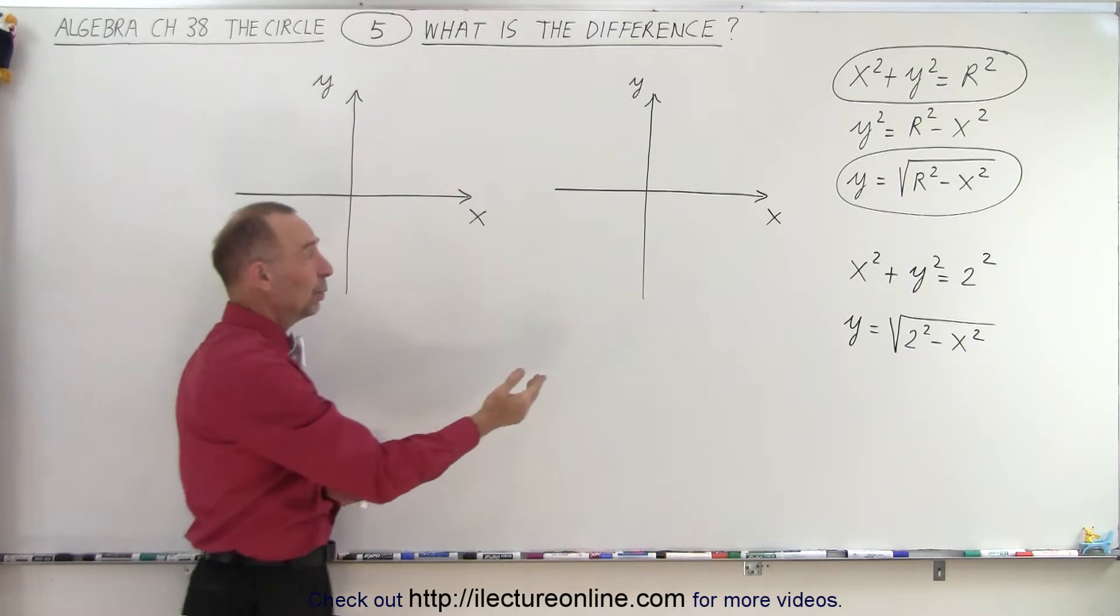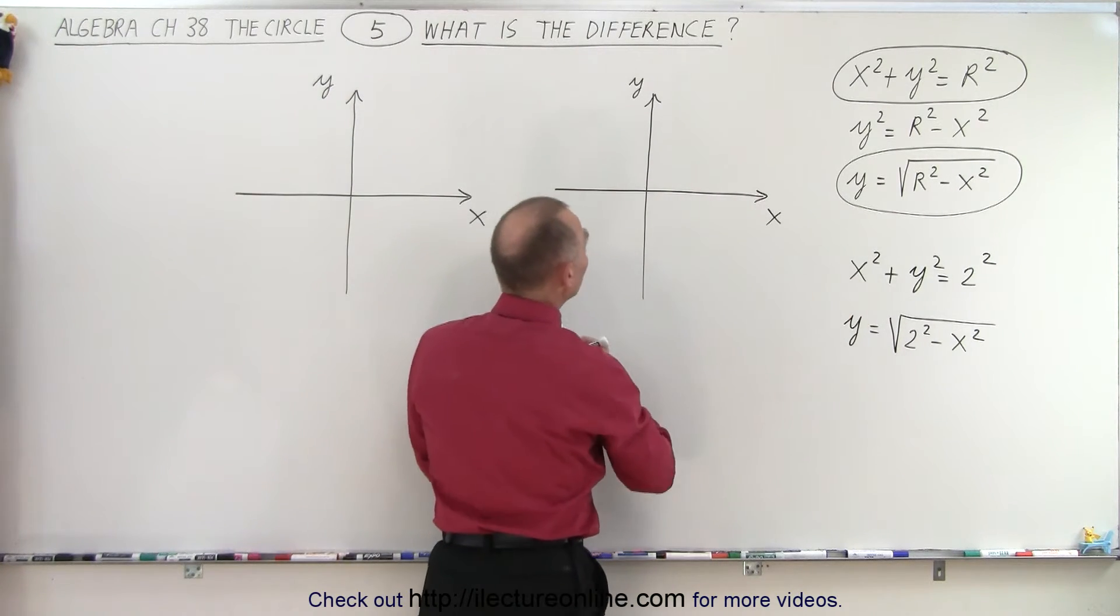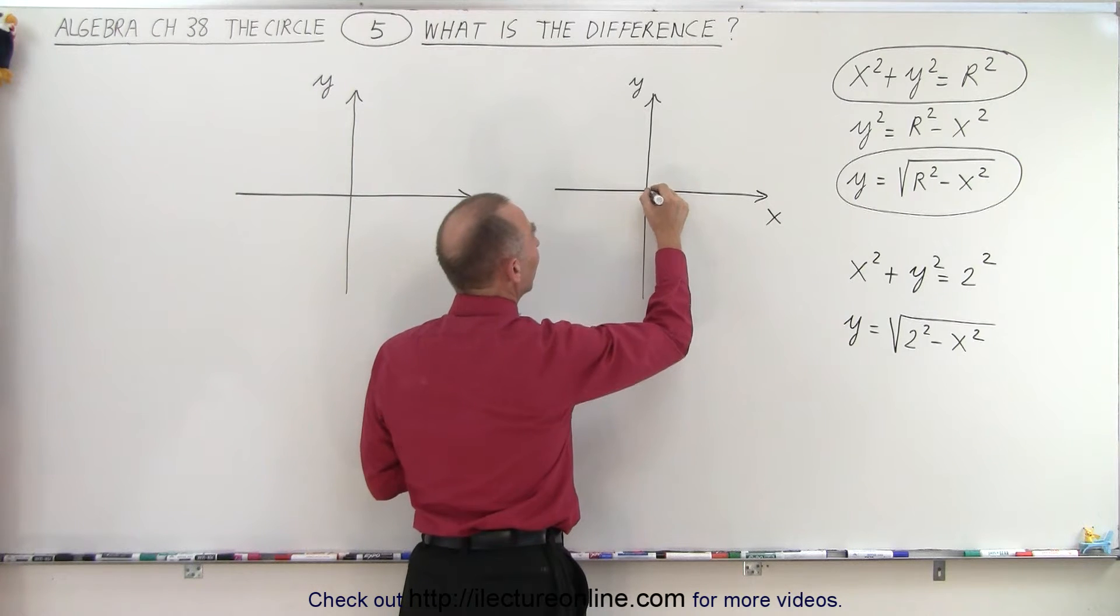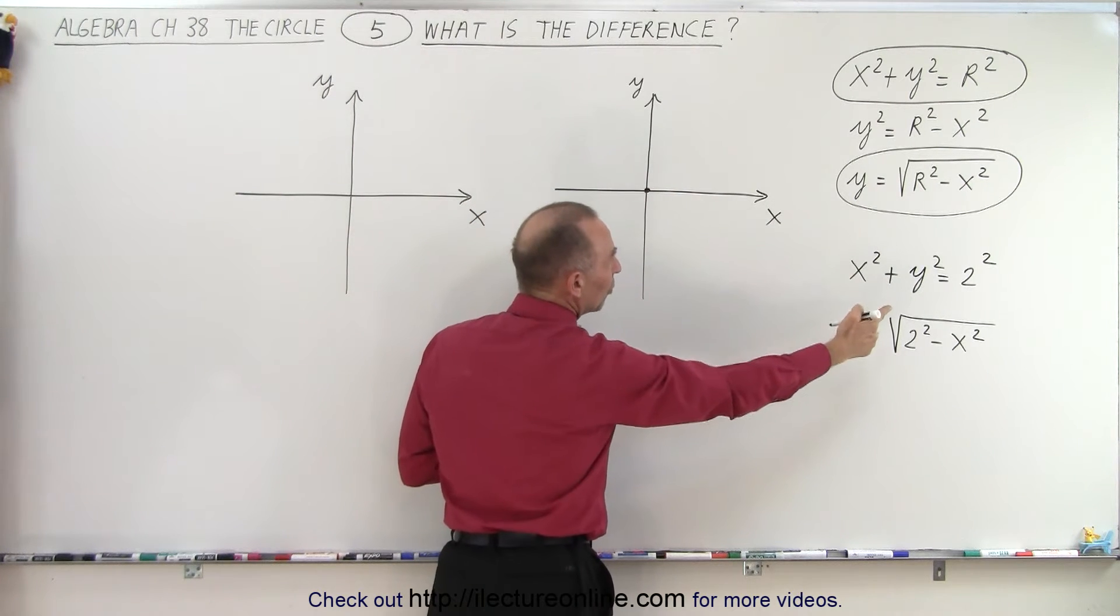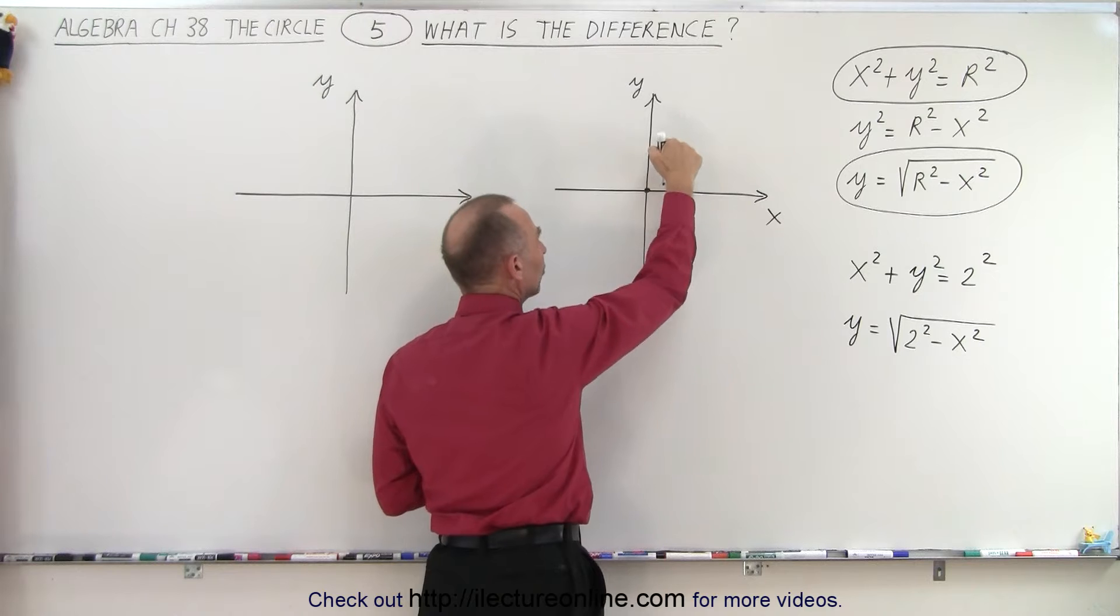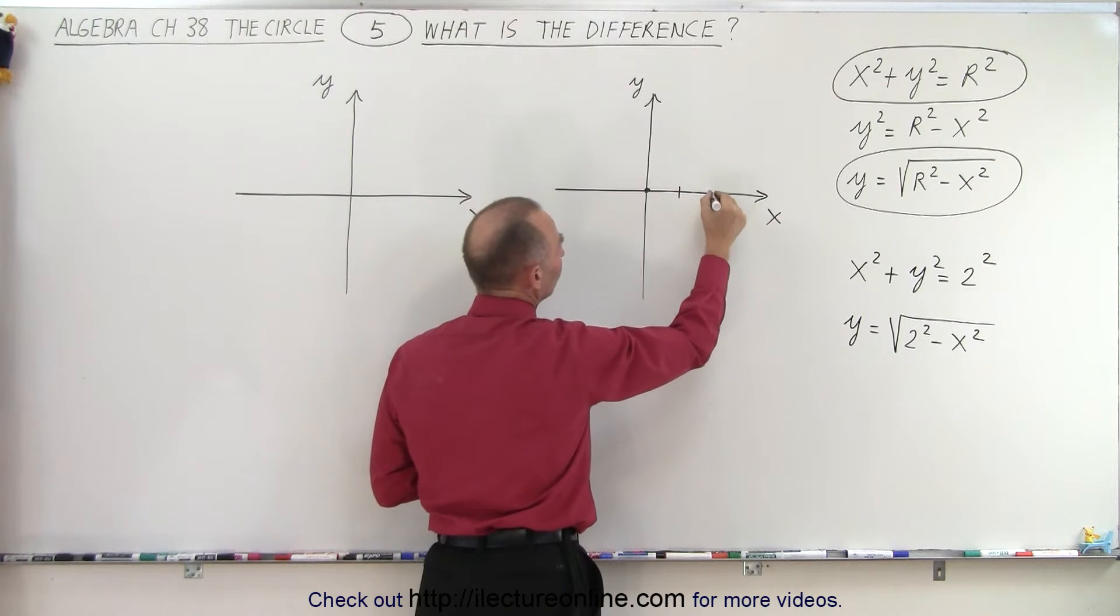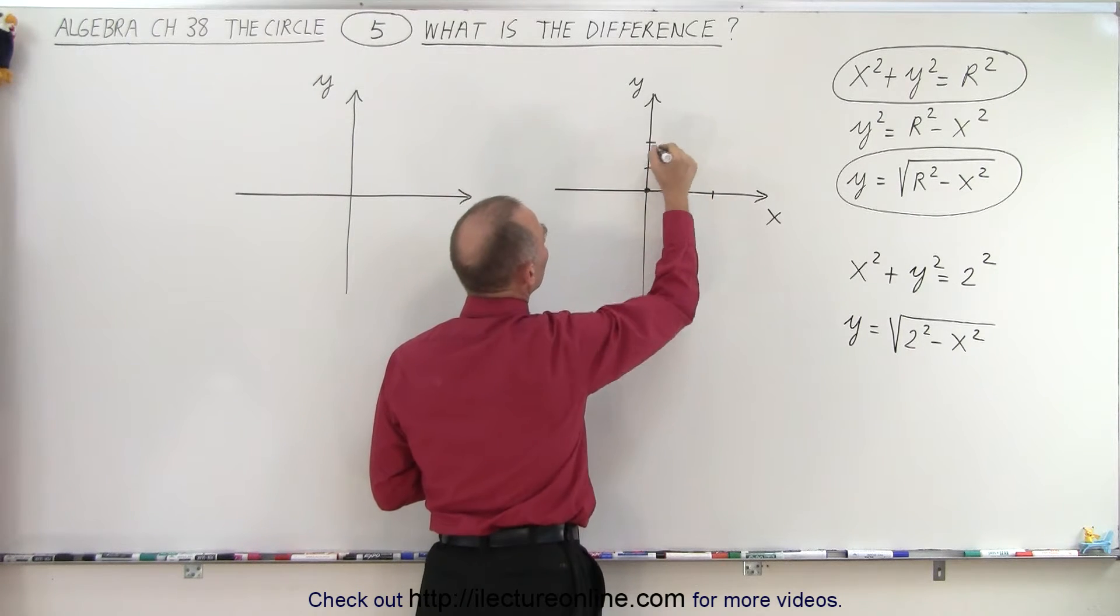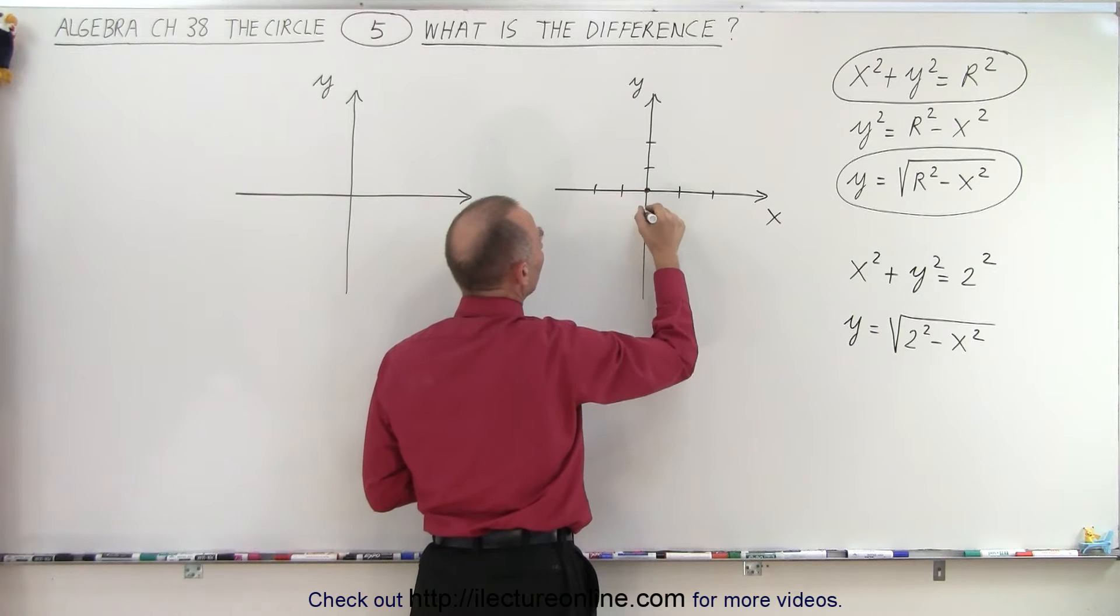Well, let's graph them and see what happens. On the first one, we know that the center is at the origin, so we place the center here. And then we find a point 2 units to the right, 2 units to the left, 2 units up, 2 units down. So 1, 2, 1, 2, 1, 2, and 1, 2.